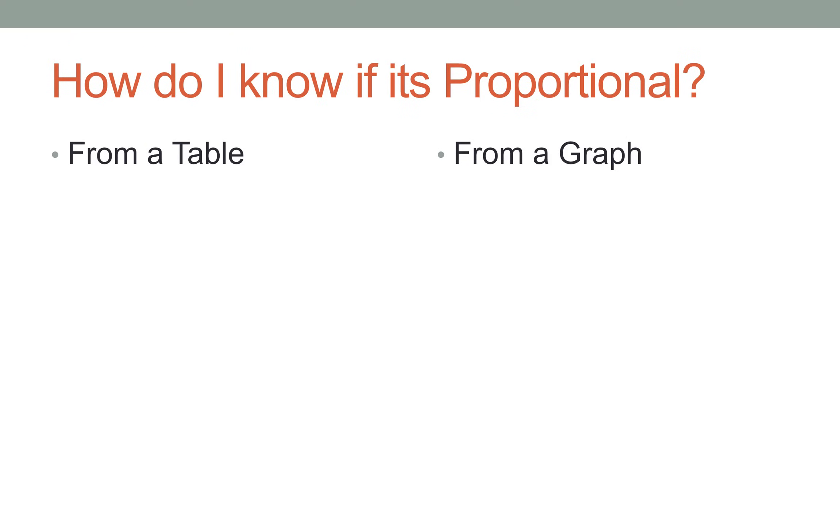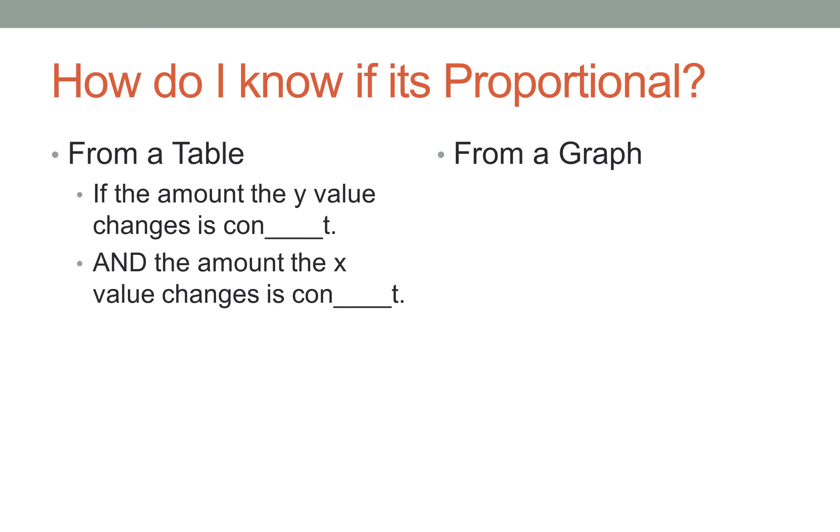We're back! All right, how do I know if it's proportional? From a table, if the amount the Y value changes is blank and the amount the X value changes is the same word blank, then the blank of blank is blank. And if the blank of blank is blank, it is proportional. Go back in the video, guys. The answers are all there. Check it out.